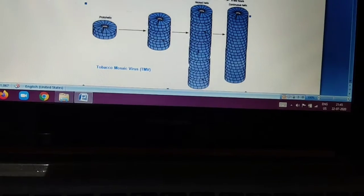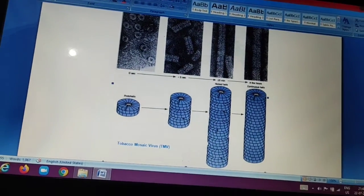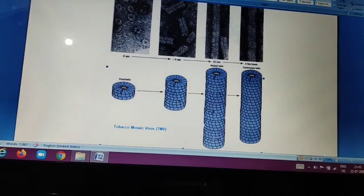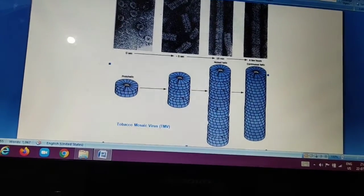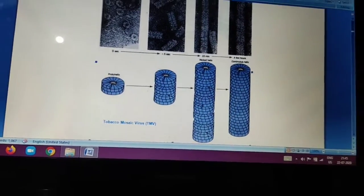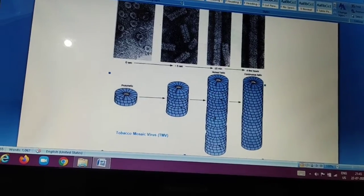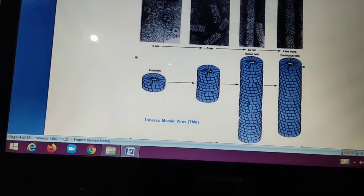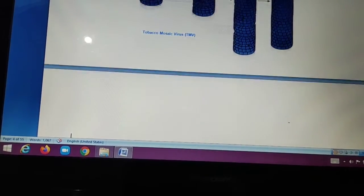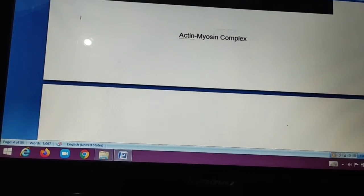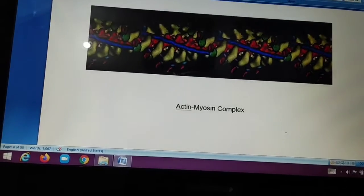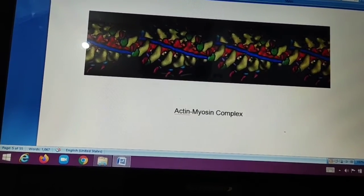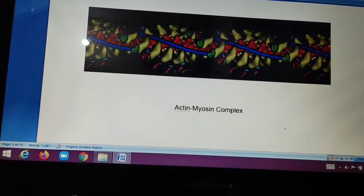This is some structure showing in figure. Supramolecule Tobacco Mosaic virus. Tobacco Mosaic virus. This is the TMV. And this is the Sarcomere Actin-Myosin Complex. This is also a Supramolecule.